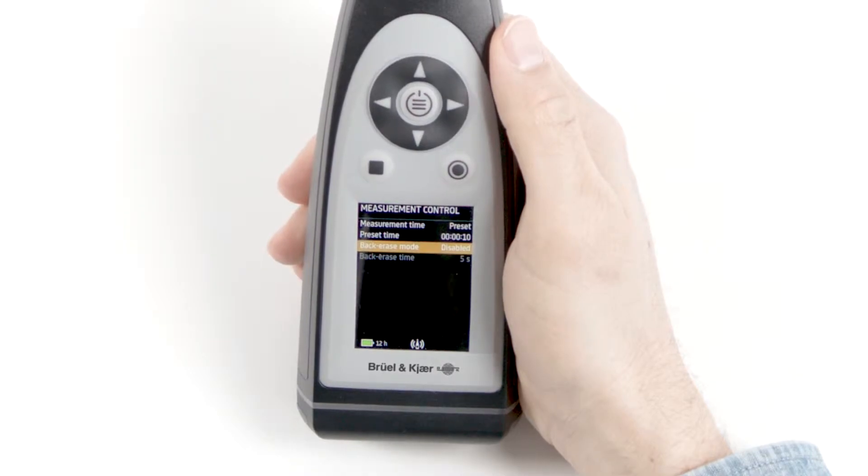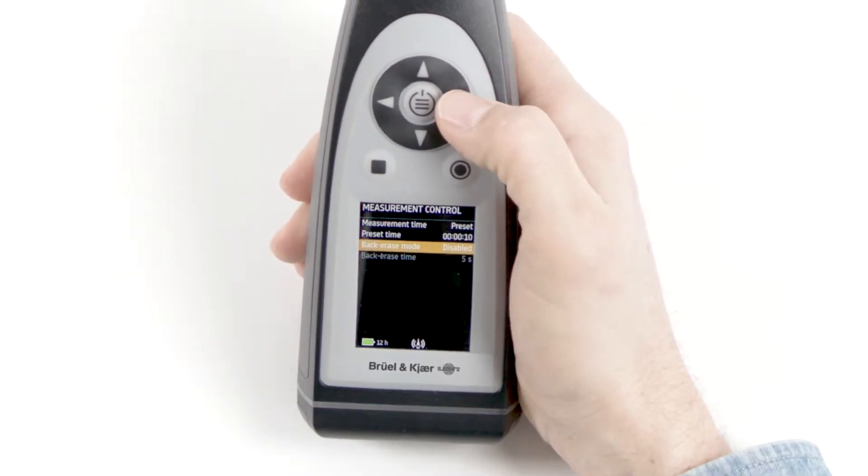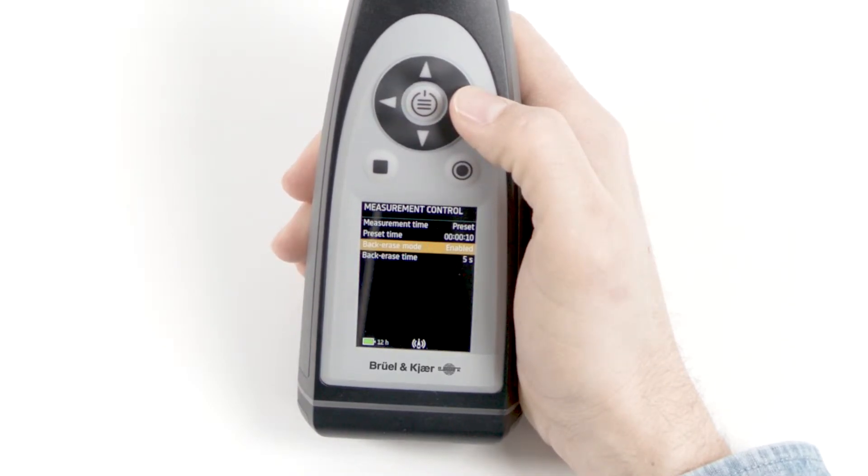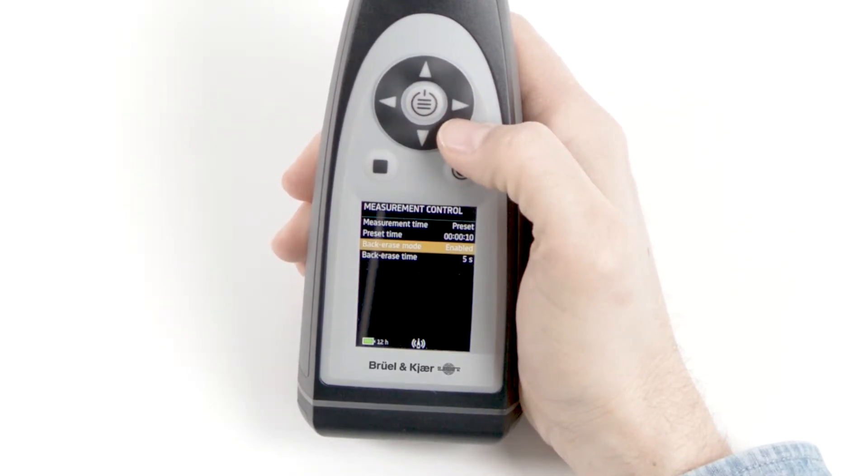We can also choose whether to enable or disable back arrays, which is useful for removing disturbances from measurements. I will enable back arrays and leave the default back arrays time of 5 seconds.